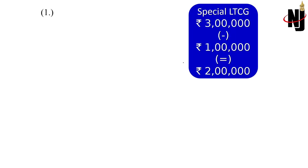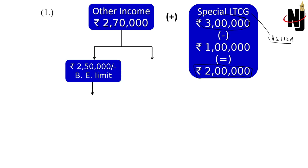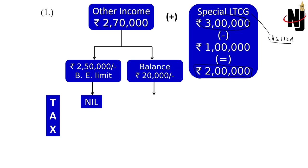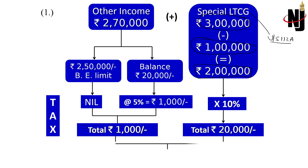For example, suppose an individual assessee has special LTCG covered by section 112A of 3 lakh rupees — first 1 lakh is not taxable, so taxable LTCG is 2 lakh rupees — and other income of 2 lakh 70,000. Tax on other income: first 2.5 lakh is the basic exemption limit so tax is nil; balance 20,000 falls under 5% slab, giving tax of 1,000. Tax on 112A LTCG of 2 lakh at 10% is 20,000. Total tax is 21,000.